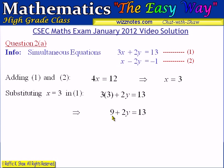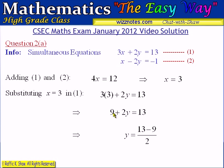We have 9 plus 2y equals 13. We subtract 9 from both sides — or equivalently take the 9 to the other side and change the sign — then divide by 2. So 2y equals 13 minus 9, which is 4, and then 4 divided by 2 gives us y equals 2.